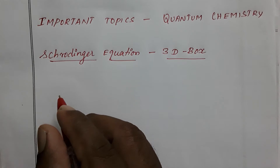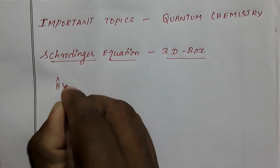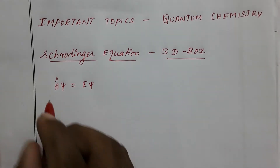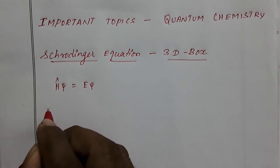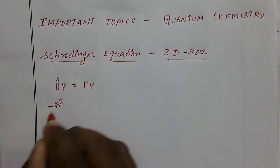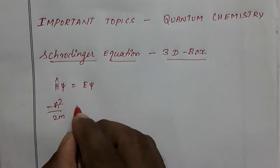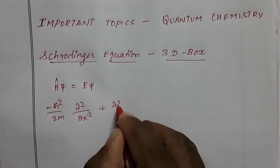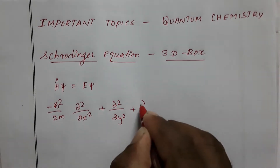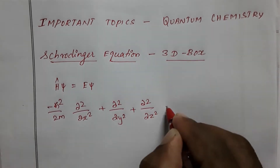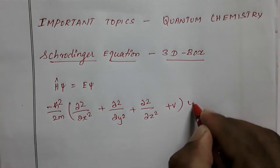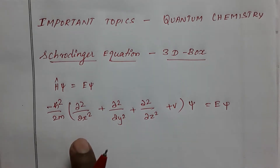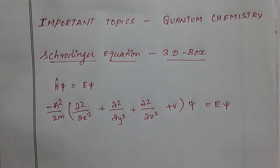So from the Schrödinger equation, H-cap psi equal to E psi — you know that this is a time-independent Schrödinger wave equation. From this, H is called the Hamiltonian: minus h-cross-squared over 2m, times (d²/dx² + d²/dy² + d²/dz²) plus V, times psi, equal to E psi. Here we are taking x, y, and z because this is a 3-dimensional box.